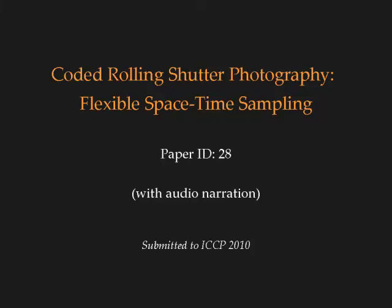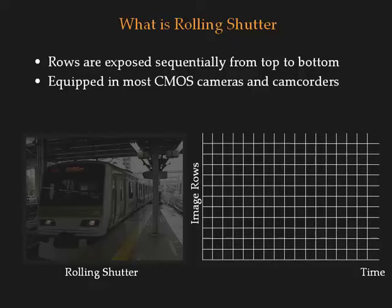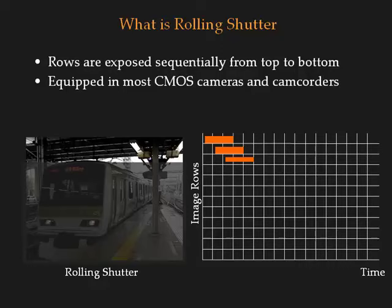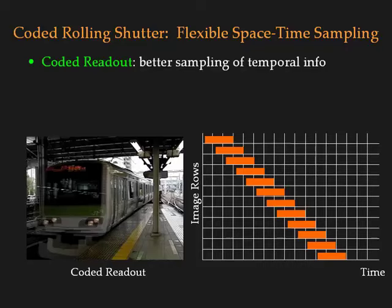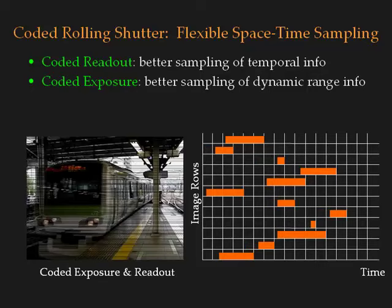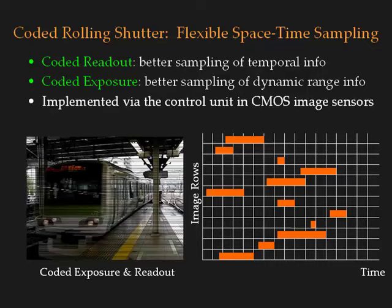In this paper, we propose coded rolling shutter for flexible space-time sampling. Most CMOS image sensors use rolling shutter in which rows of pixels are sequentially exposed to light and are read out from top to bottom. The exposure time is fixed while the readout timings are linearly shifted. Rolling shutter is often considered a disadvantage to image quality because it introduces skew for moving objects. In this paper, we show that by controlling the readout timings and the exposures for different rows, rolling shutter can be very useful for computational photography. Both controls can be readily implemented within the control unit of CMOS image sensors.